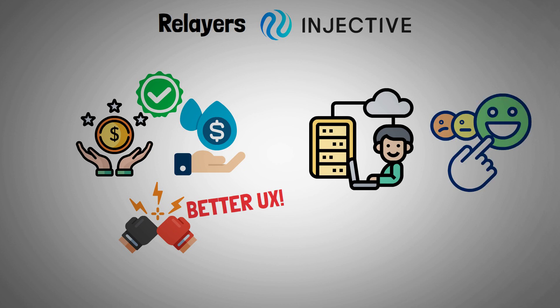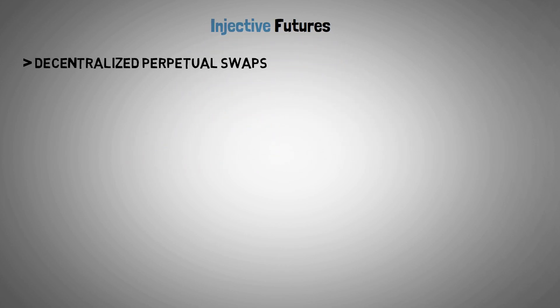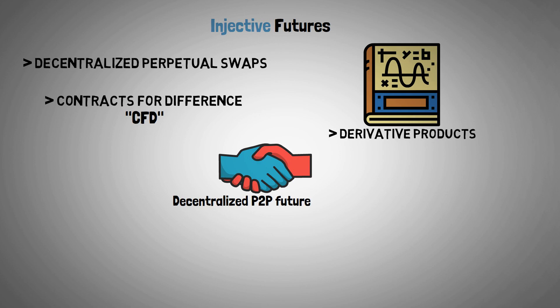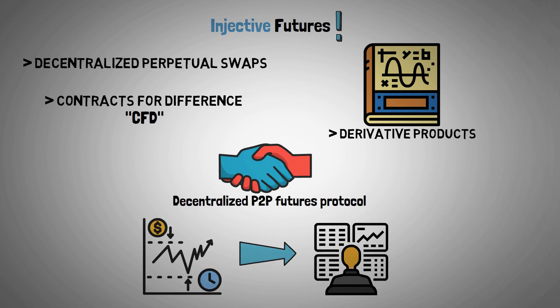The last component is Injective Futures. Decentralized perpetual swaps, contracts for difference, short CFDs, and many other derivatives are currently supported by this decentralized peer-to-peer futures protocol. With just a price feed, the protocol enables users to build and trade on any derivative market.